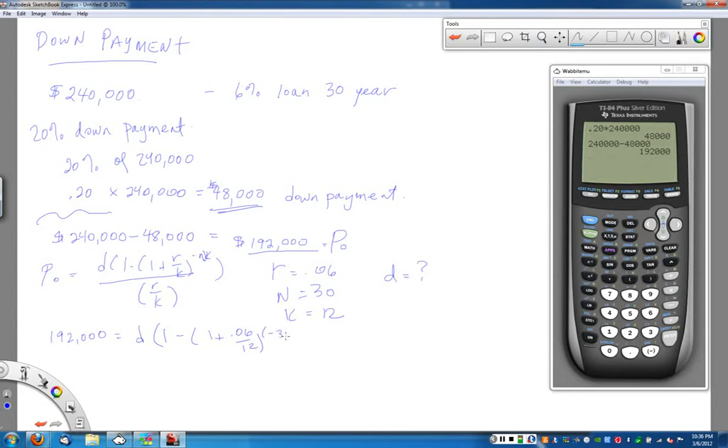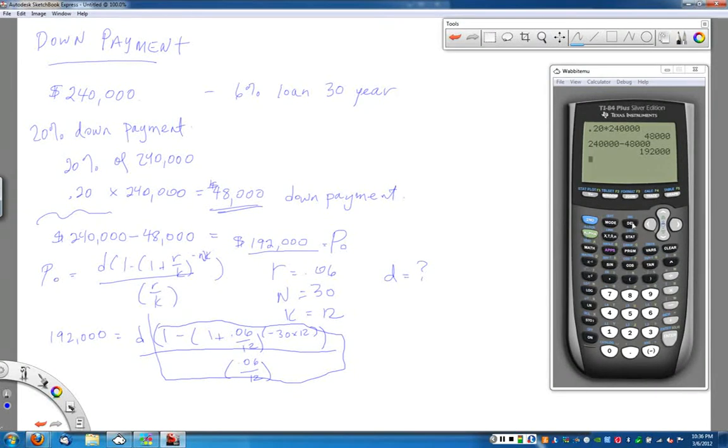D is what we're trying to find and that is the amount of that monthly payment. So here we're going to do 192,000 equals D times 1 minus 1 plus R was 0.06 divided by 12 to the, and again put this in parentheses, negative 30 times 12. Make sure you close the big set, close your parentheses for your exponent, but also close the parentheses for the top of this big fraction and divided by 0.06 divided by 12. Just like before, all of this stuff has no variables involved in it, so figure out all of these things that are in the box and then I can solve my equation for D.